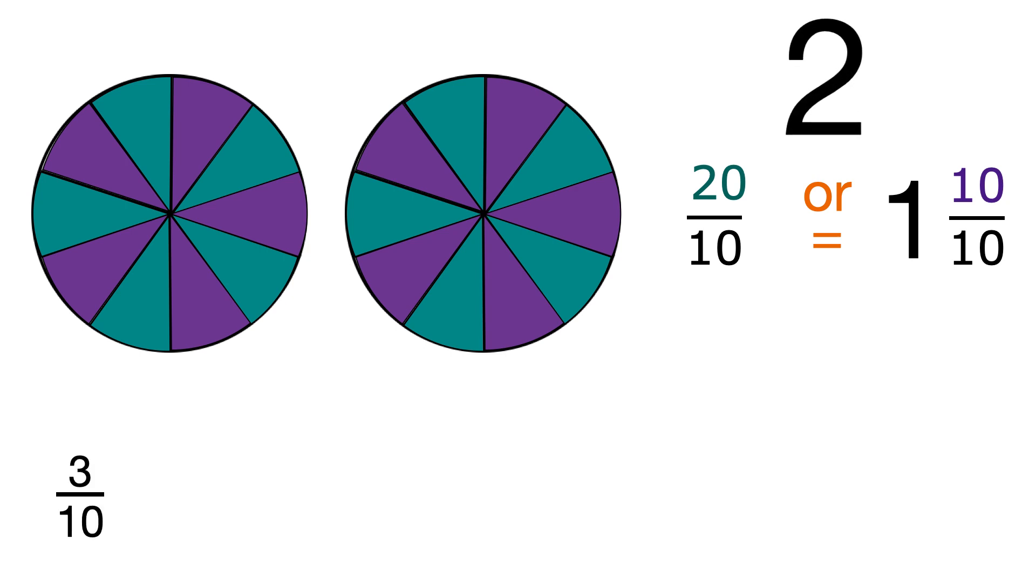When we have a fraction like 3 tenths where the numerator, the top number, is smaller than the denominator, the bottom number, we call it a proper fraction.